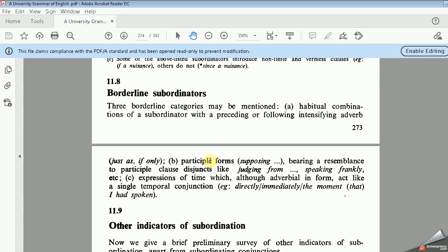Number B, or letter B, participle forms such as supposing which is bearing a resemblance to participle clause disjuncts like judging from, speaking frankly, etc.